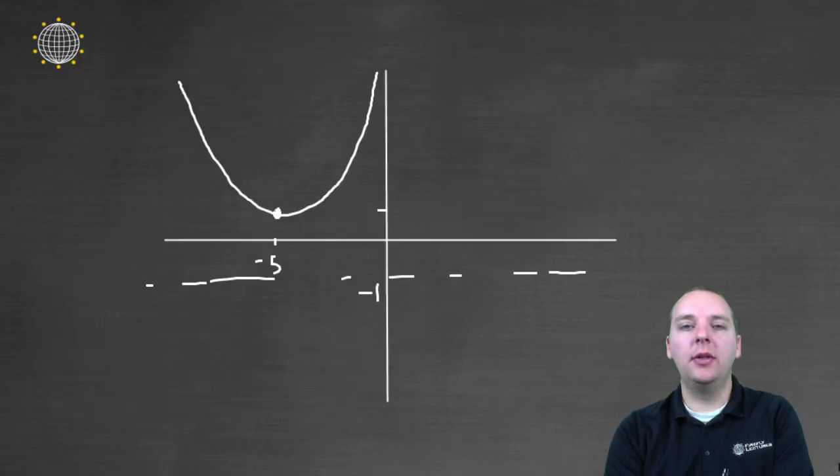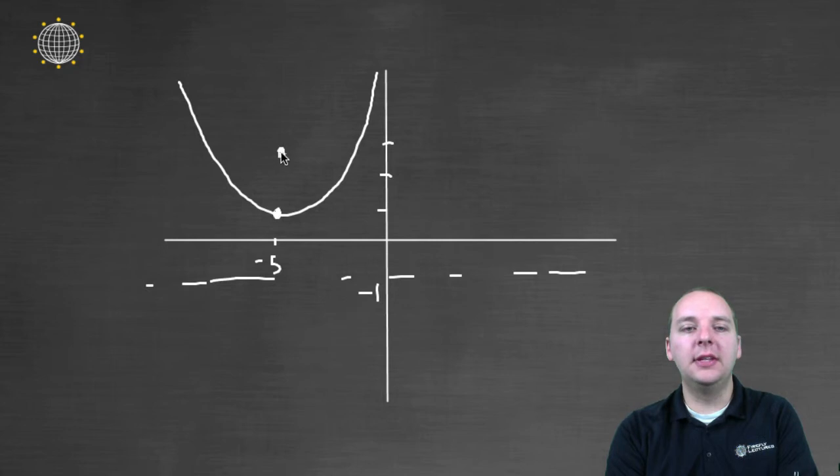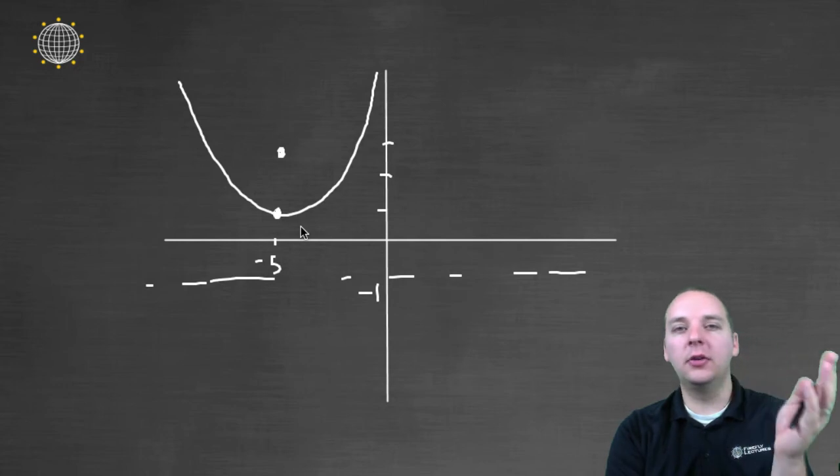Well, the focus, on the other hand, is the same distance away from the directrix, but on the opposite side. So not below (-5, 1), but above (-5, 1). How far? Again, 2 units. So we'll go up 1, 2 units. Notice it keeps the same x-coordinate, because the parabola opens up or down. The focus isn't going to be off kilter left or right. It's just going to be above or below the vertex.